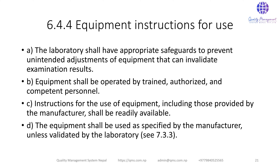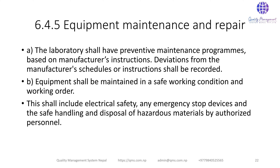6.4.4 Equipment Instructions for Use: The laboratory shall have appropriate safeguards to prevent unintended adjustment of equipment that could invalidate examination results. Equipment shall be operated by trained, authorized, and competent personnel. Instructions for the use of equipment, including those provided by manufacturers, shall be readily available. Equipment shall be used as specified by the manufacturer unless validated by the laboratory.